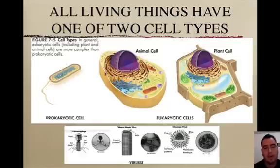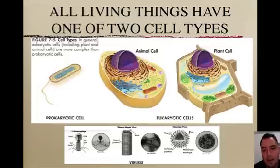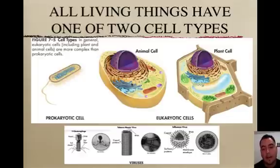Eukaryotes are examples like plant and animal cells. Here you have a nucleus, which is not in the prokaryote. The nucleus protects the DNA a little better than a bacteria does. And you have all these membrane-bound organelles not found in bacteria, like mitochondria, ER, Golgi, and lysosomes.